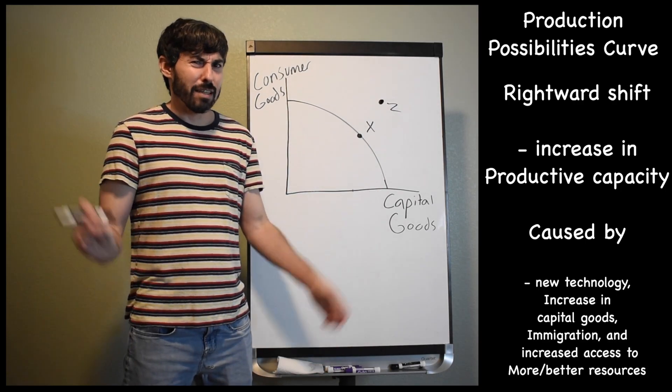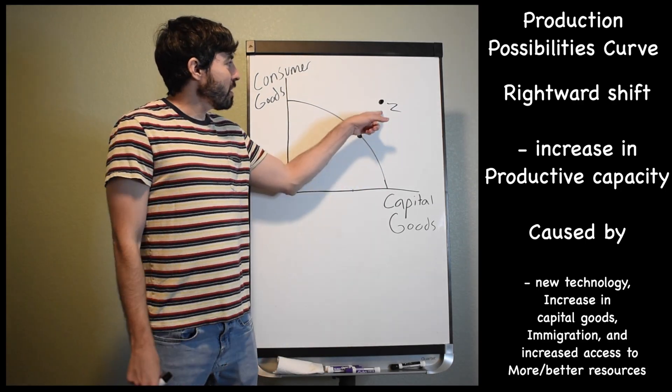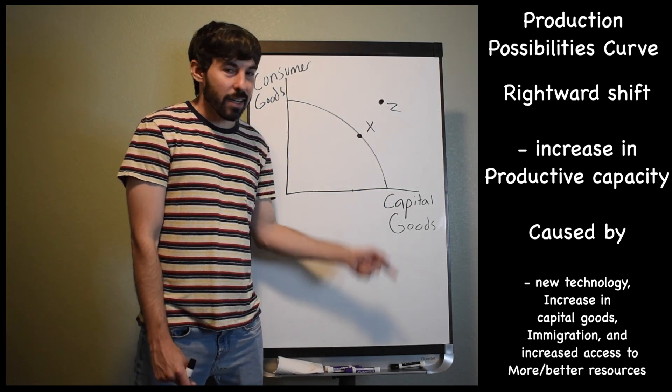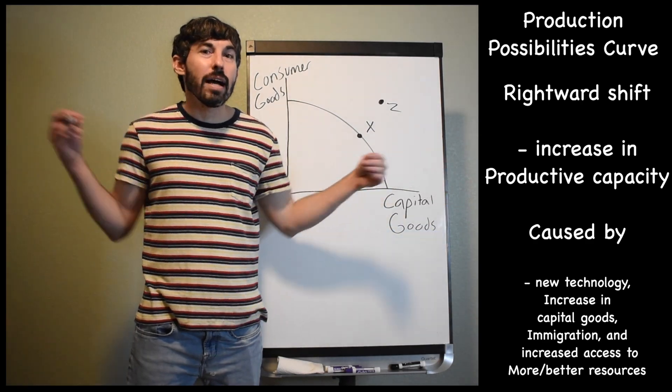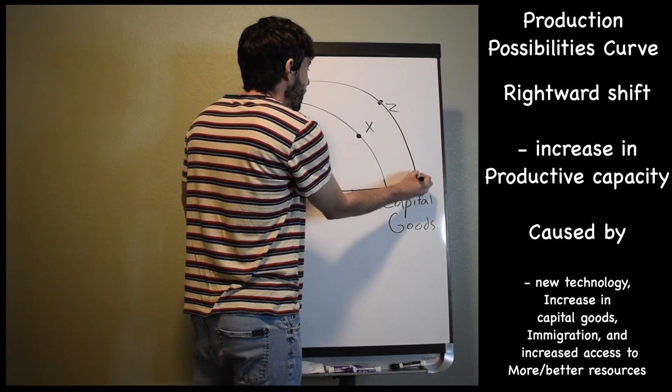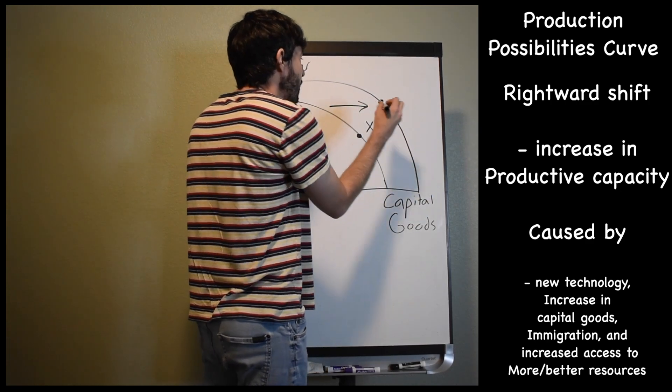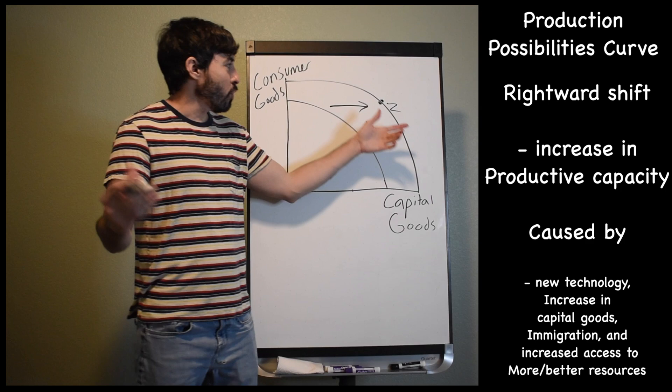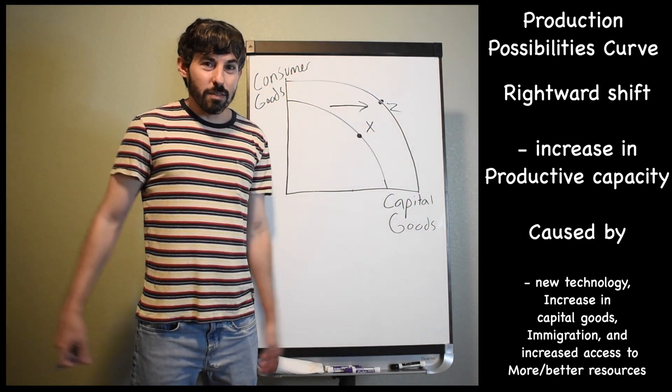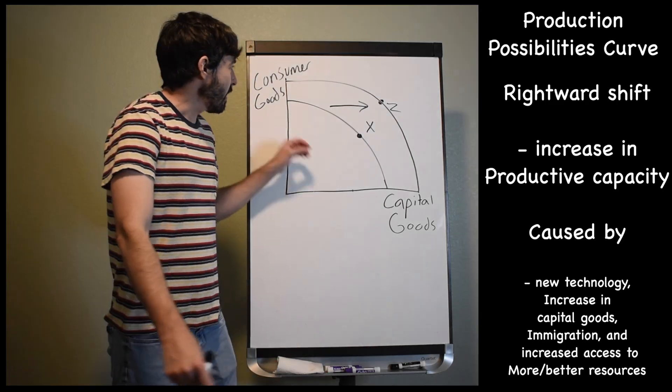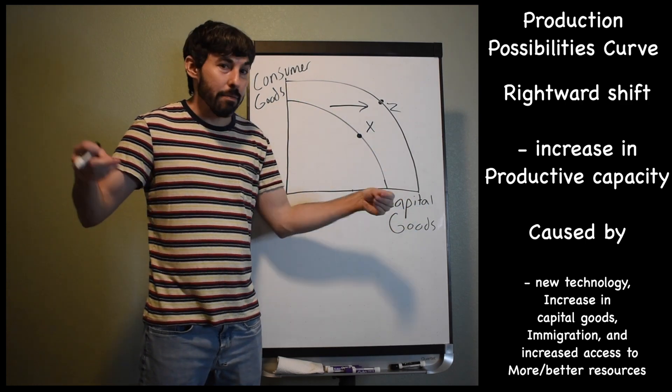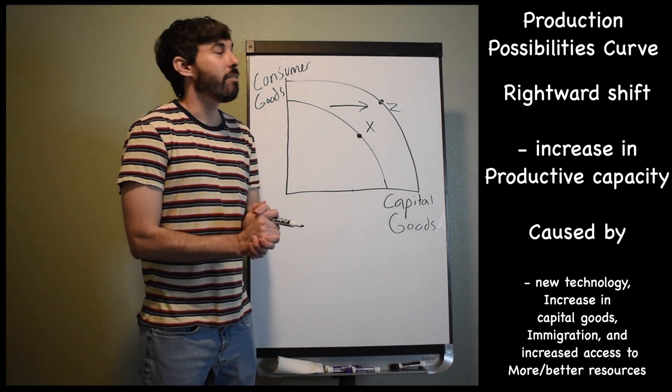If you recall from a minute ago, I told you that this country could not produce at point Z. They could not make both 100 consumer goods and 100 capital goods. It's impossible. However, if there is a shift to the right of the production possibility curve and an increase in the country's productive capacity, then what was formerly impossible is now possible. Yay. Anything is possible. I hate the Celtics. All right. So the whole thing shifts to the right. And now, even with full employment, with the same amount of people working, we can now make more of everything.